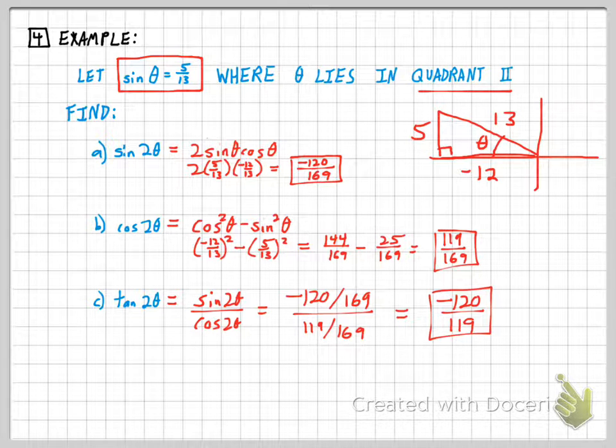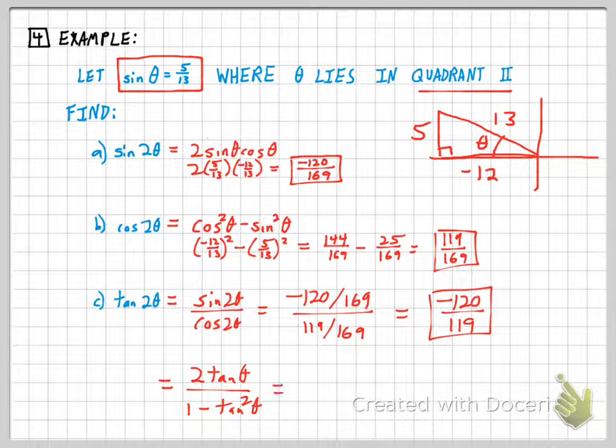Just to show that I can also get that same answer by using the formula, the formula says 2 tangent θ over 1 minus tangent squared θ. And so for my picture, the tangent is negative 5 twelfths. So I'd have 2 times negative 5 twelfths over 1 minus 25 over 144.